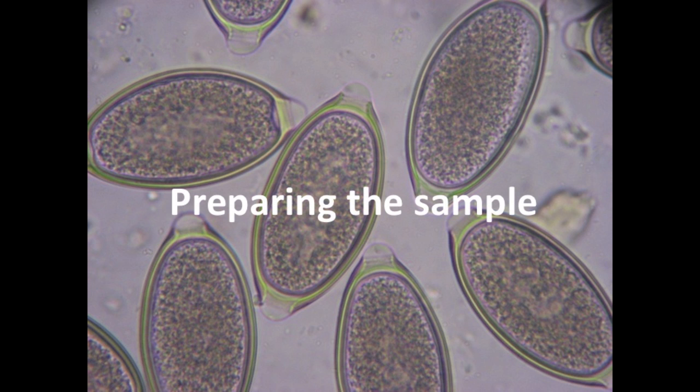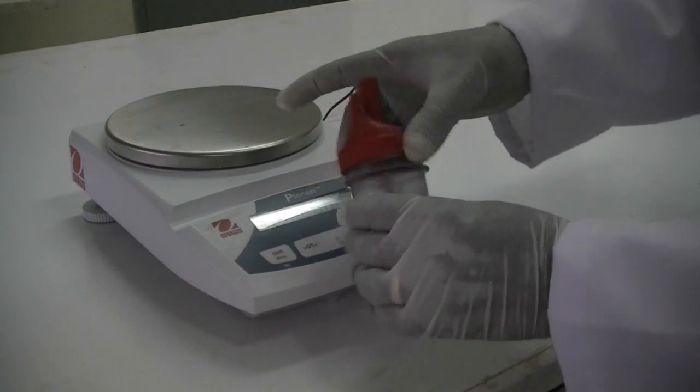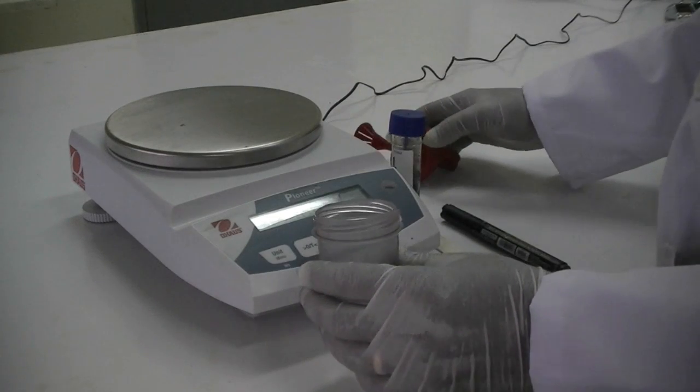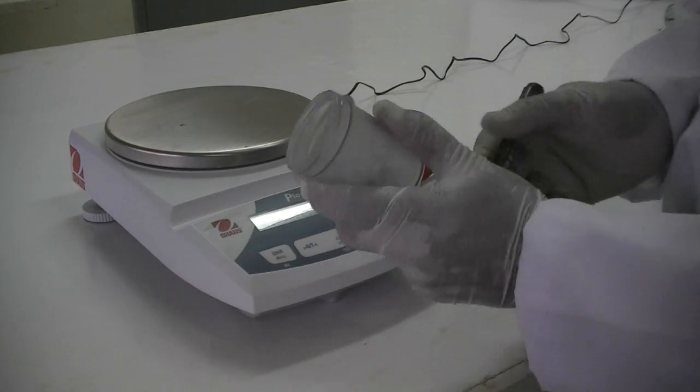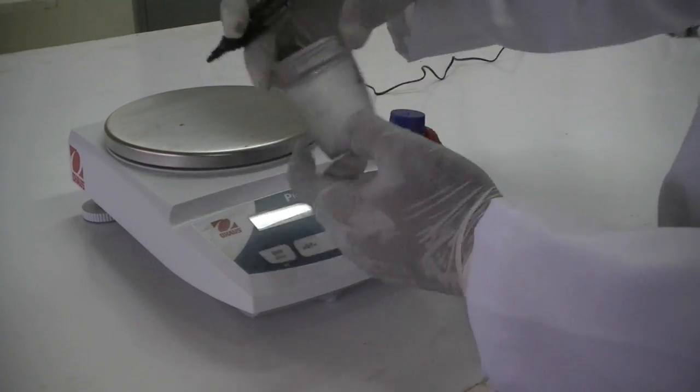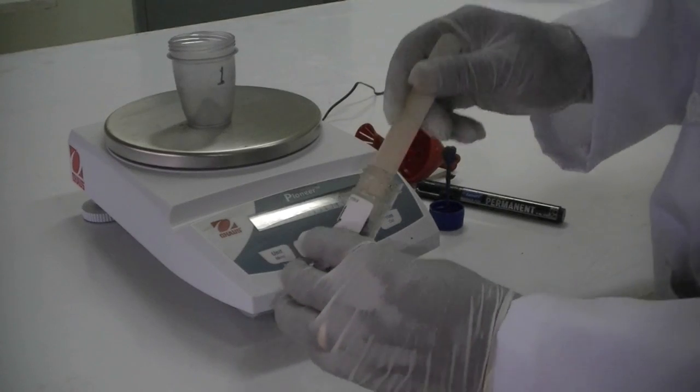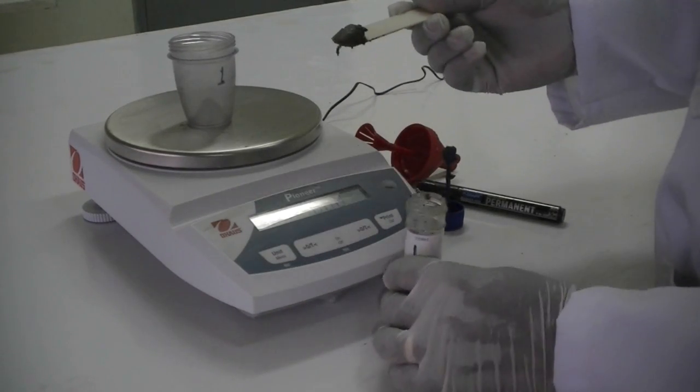Preparing the sample. First, take a clean fill FLOTAC and open it. Label the fill FLOTAC and place it on the scale. Press the tare key and add exactly 2 grams of stool with a wooden tongue depressor.